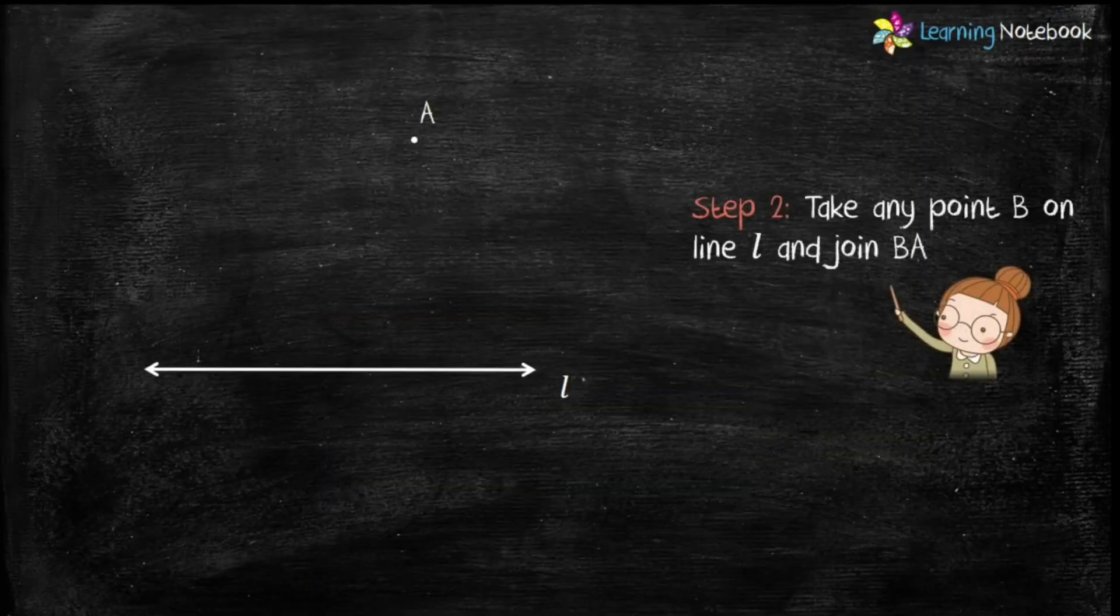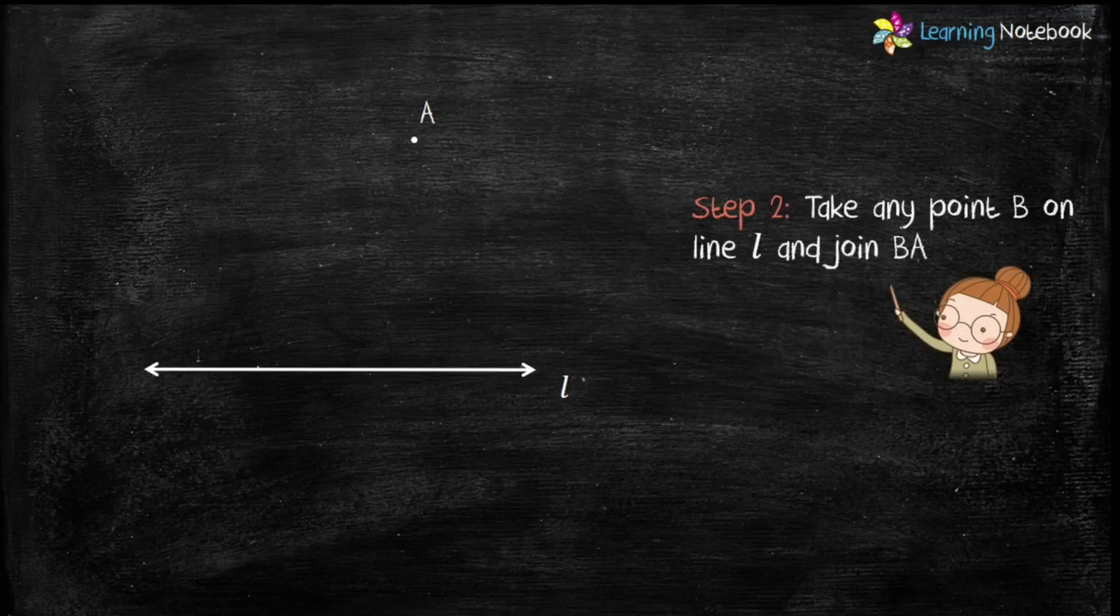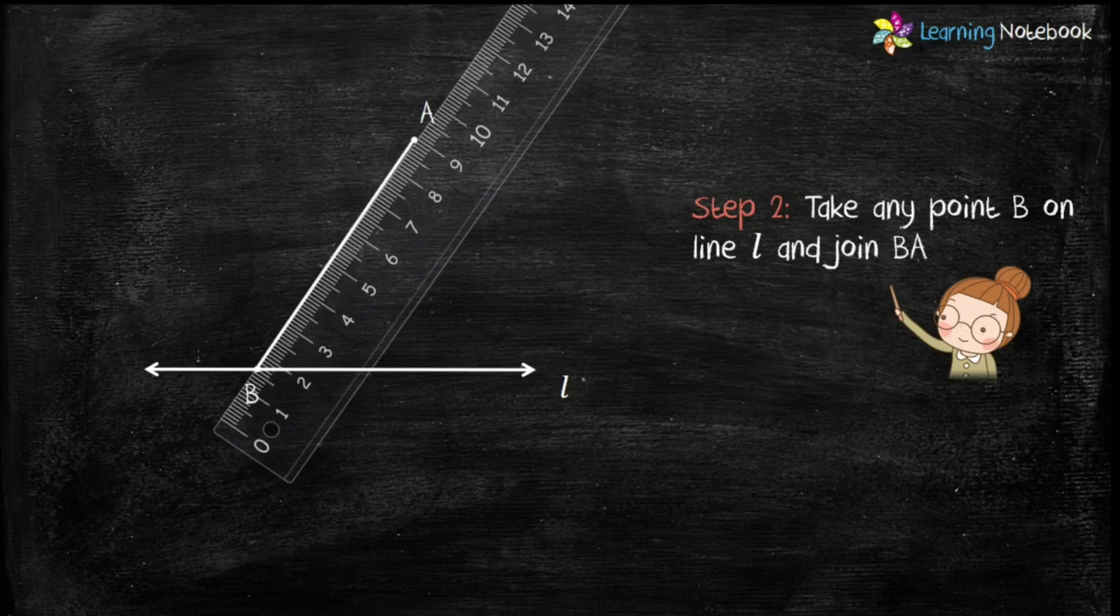Now, step 2 is take any point B anywhere on line L and then join BA with the help of a ruler.